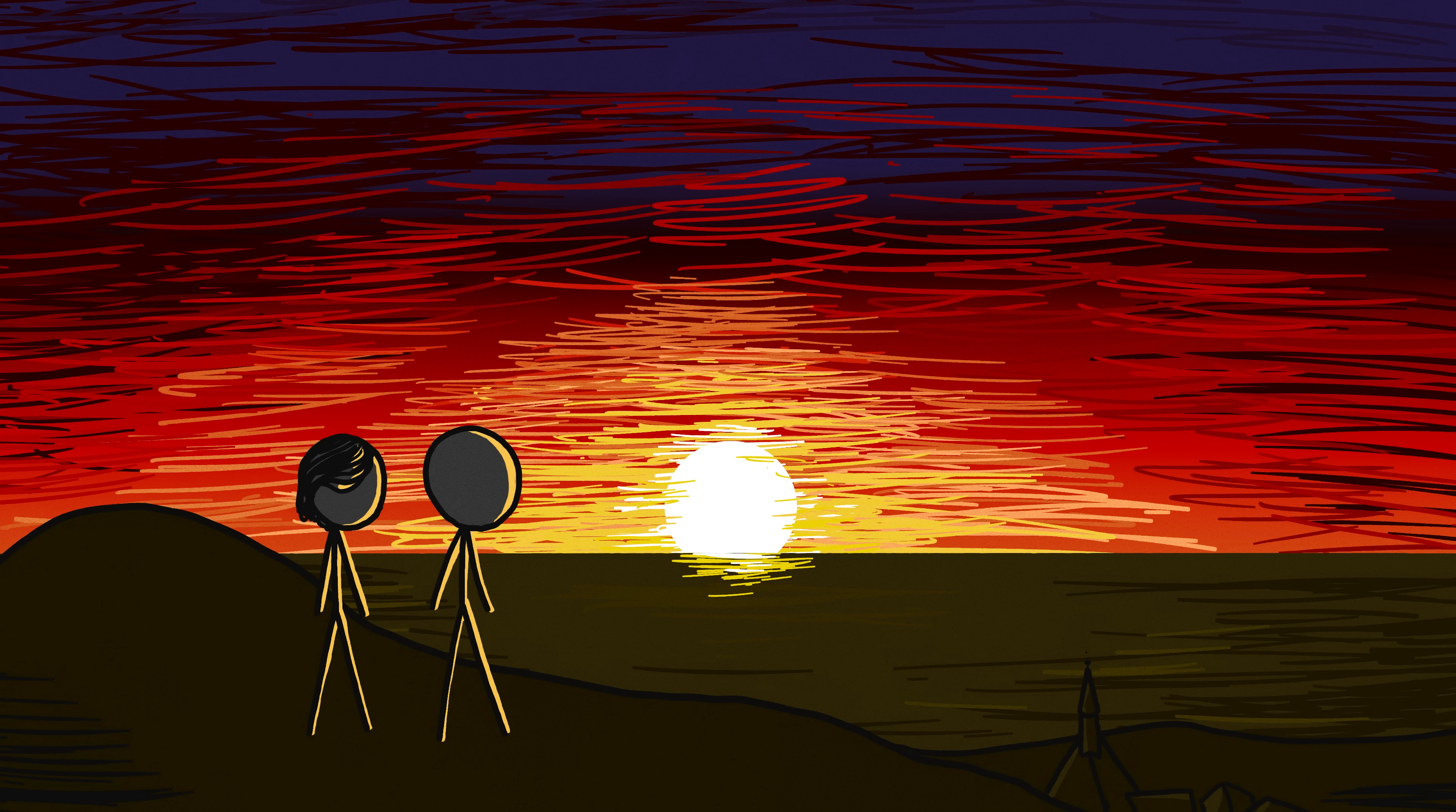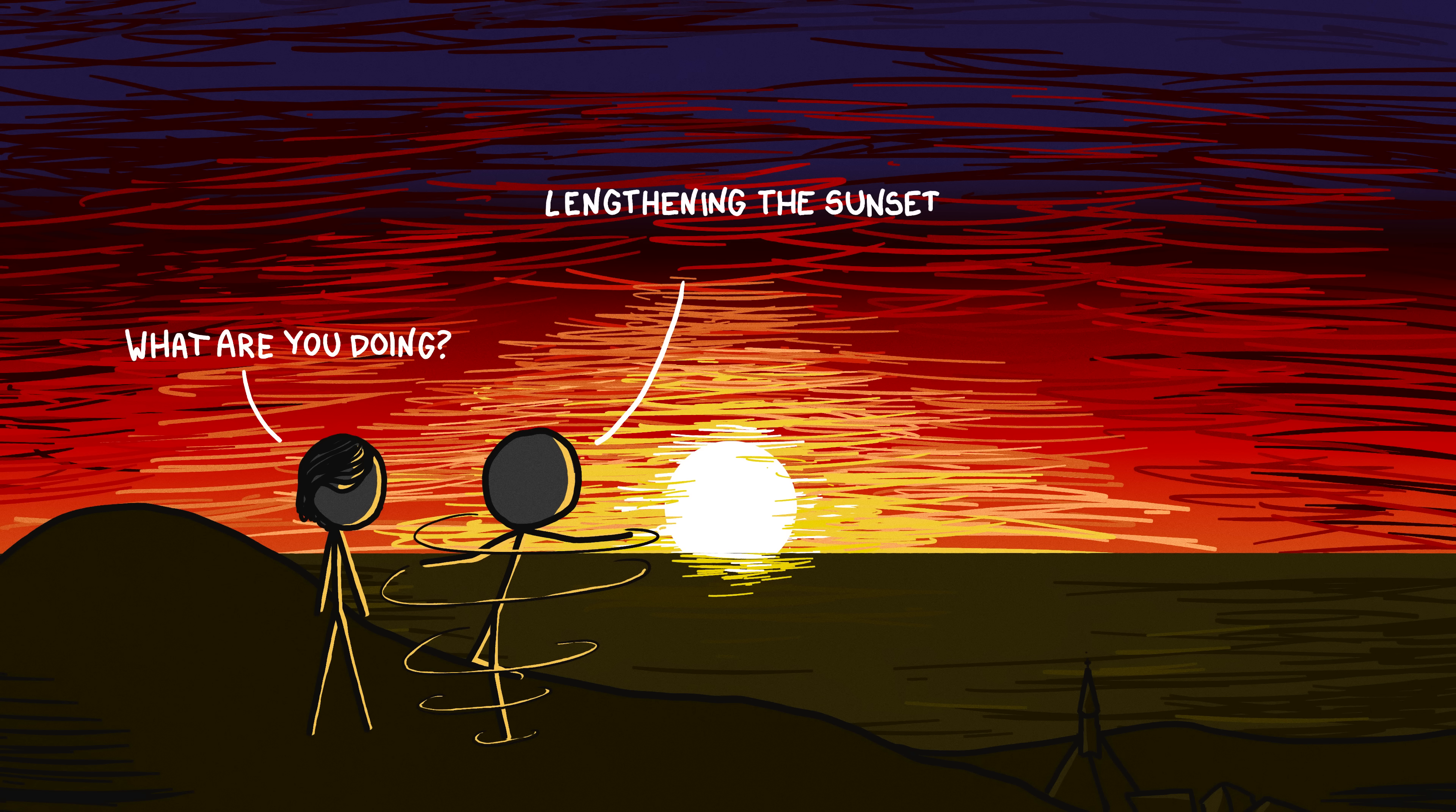But if you are stuck on Svalbard and you want to make the sunset or sunrise last a little longer, you can always try spinning counterclockwise so your angular momentum slows the Earth's rotation. It's true that it will only add an imperceptibly small fraction of a nanosecond, but it might be worth it.